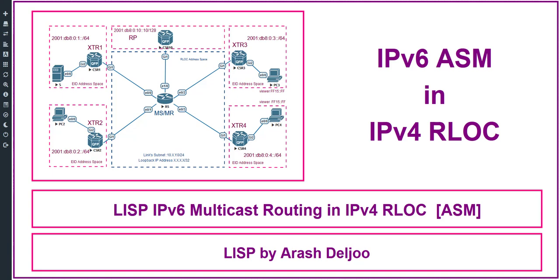In this video, I am going to talk about the IPv6 Any-Source Multicast (ASM) implementation with IPv4 routing locator (RLOC) address space. As you can see here, in the EID space we are using IPv6, but in the RLOC address space we are using IPv4. I am going to show you how you can implement IPv6 Any-Source Multicast in IPv4 RLOC space.